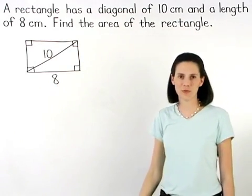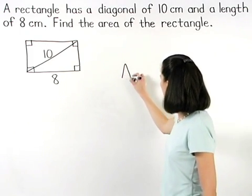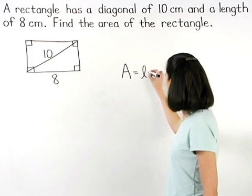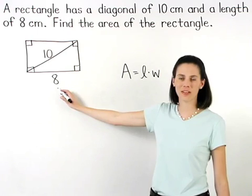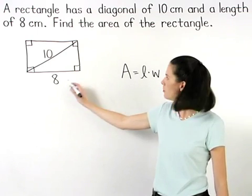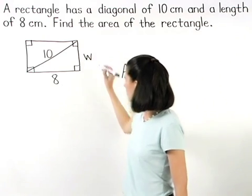Remember that the formula for the area of a rectangle is length times width. We're given that the length of the rectangle is 8 centimeters, but we don't know the width, which we can label in our diagram as W.